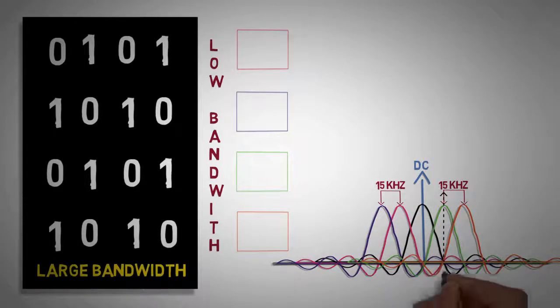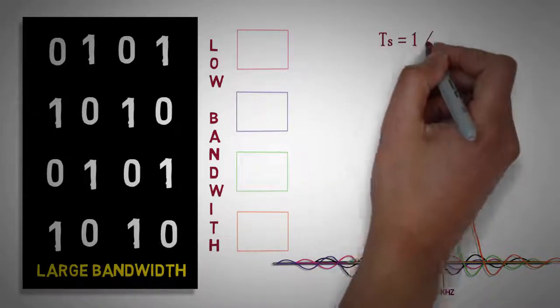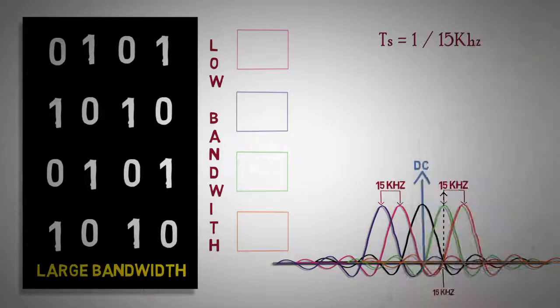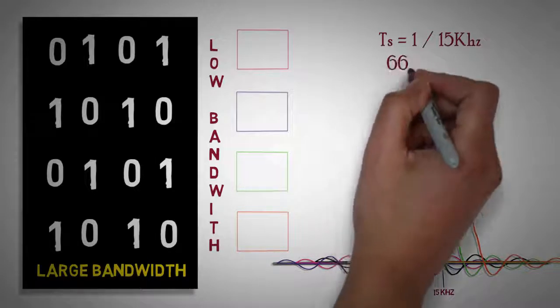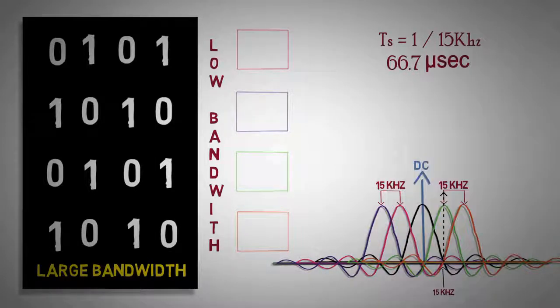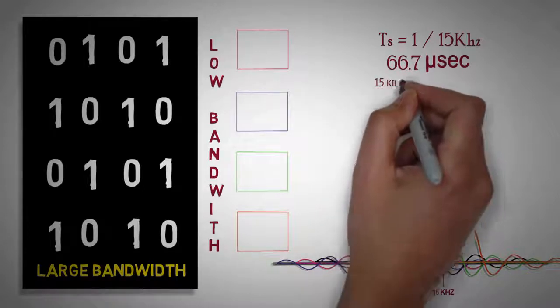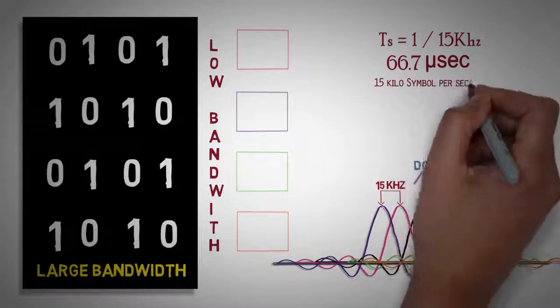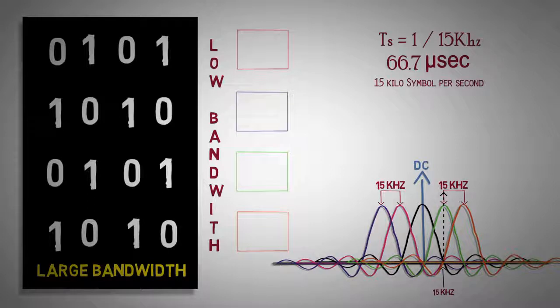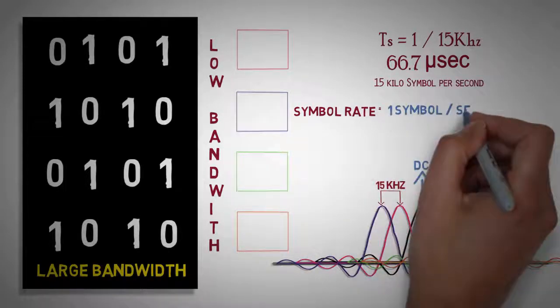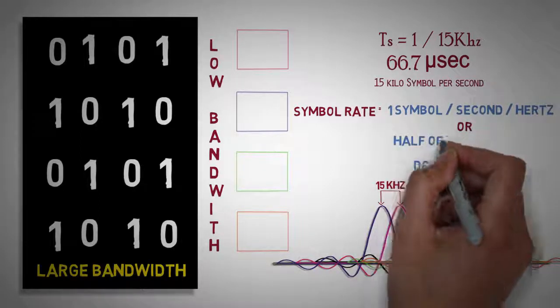As the lowest sub-carrier is of 15 kilohertz, symbol duration TS is equal to 1 by 15 kilohertz or 66.7 microseconds. Consequently a 1 sub-carrier can provide a symbol rate of 15 kilosymbol per second, which is analogous to having a symbol rate of 1 symbol per second for 1 hertz of bandwidth or Nyquist rate.